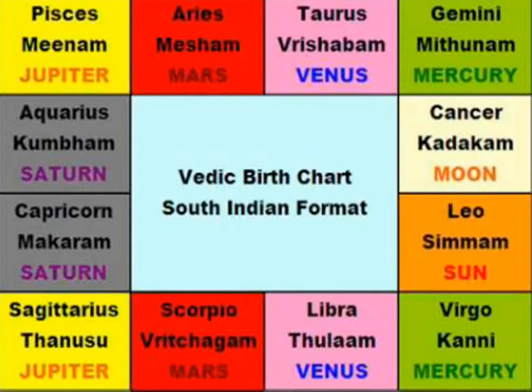First: Aries, Taurus, Gemini, Cancer, Leo, Virgo, Libra, Scorpio, Sagittarius, Capricorn, Aquarius, Pisces. These are the 12 houses.